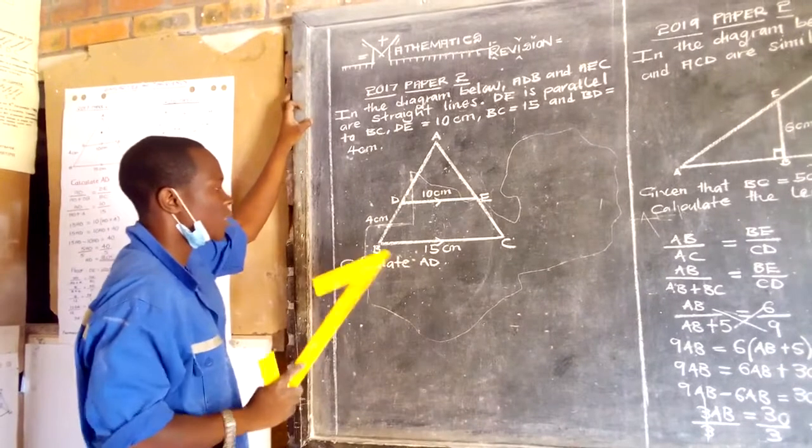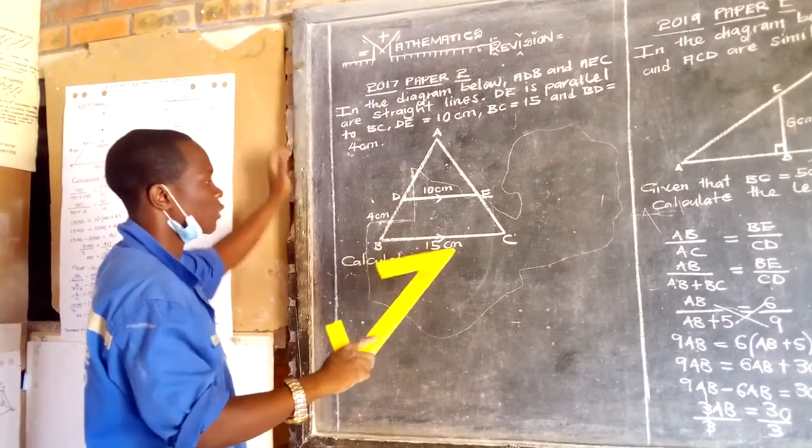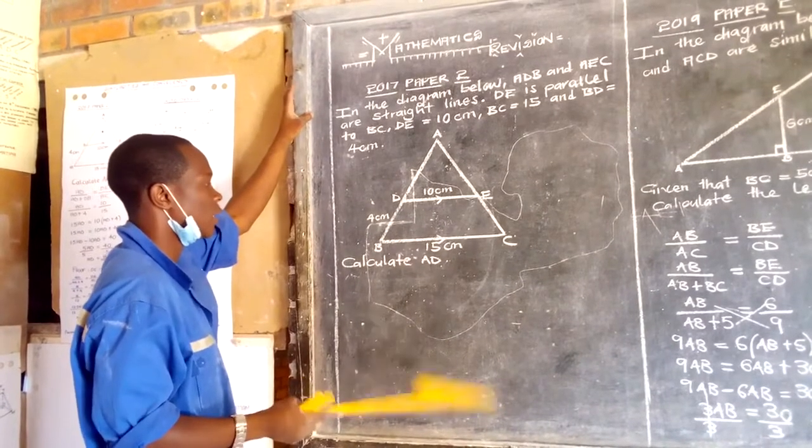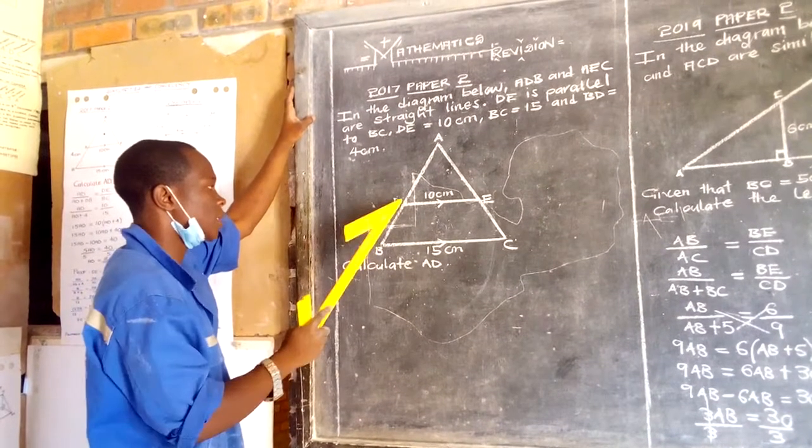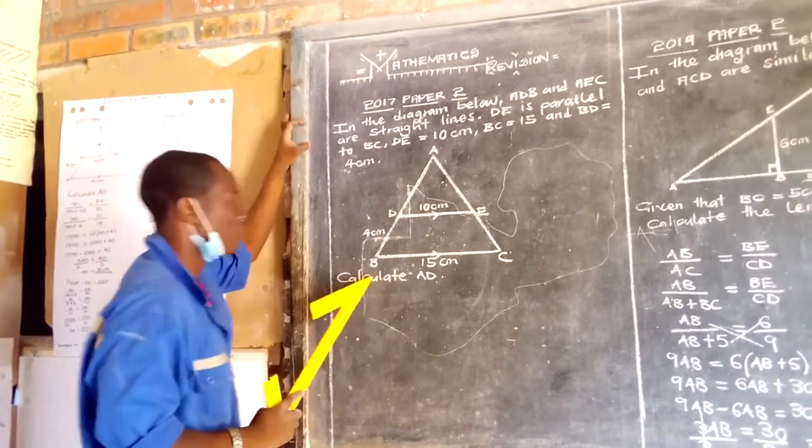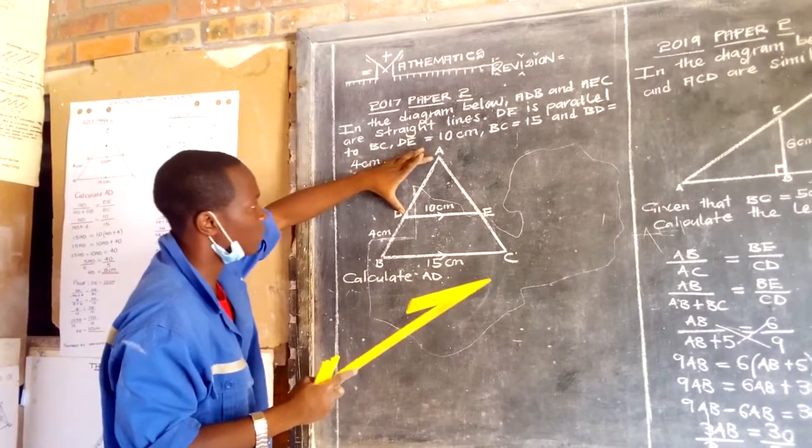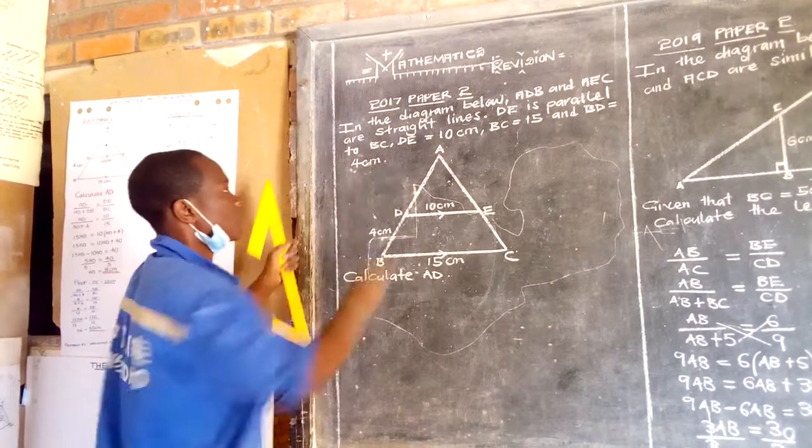Then the length from B to C is 15 centimeters as shown. And the length from B to D is 4 centimeters. Then the question asks, calculate the length AD, from A to D, the distance, this one.